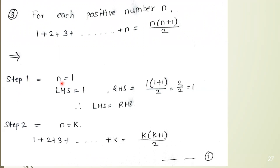We consider the initial value n equal to 1. For the LHS, the series 1 plus 2 plus 3 plus n with n equal to 1 gives LHS equal to 1. For the RHS, n(n+1)/2 with n equal to 1 gives 1 times (1+1) divided by 2, which equals 2/2 equal to 1. So LHS equals RHS, since both equal 1.